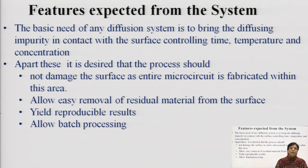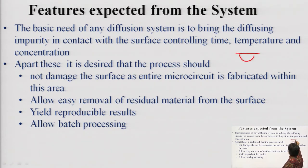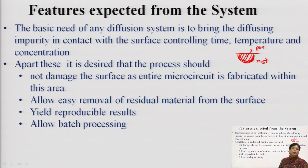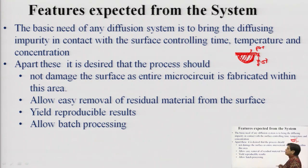If at any point of time you want to remove those species from the surface, you should be able to do that. Suppose you have obtained a diffusion profile — n-silicon with a p-plus dopant, heavy concentrated dopant profile — if you have residues, you should be able to eliminate them. If you do not want that much junction depth, you should be able to eliminate those residues, because those residues can subsequently hamper or degrade micro circuit reliability.